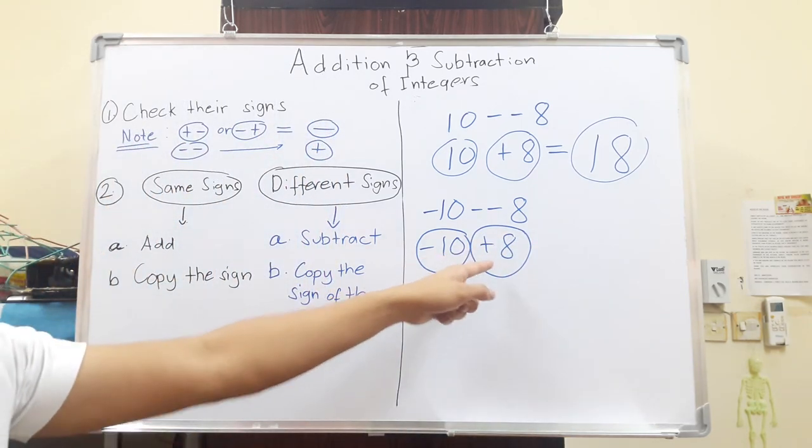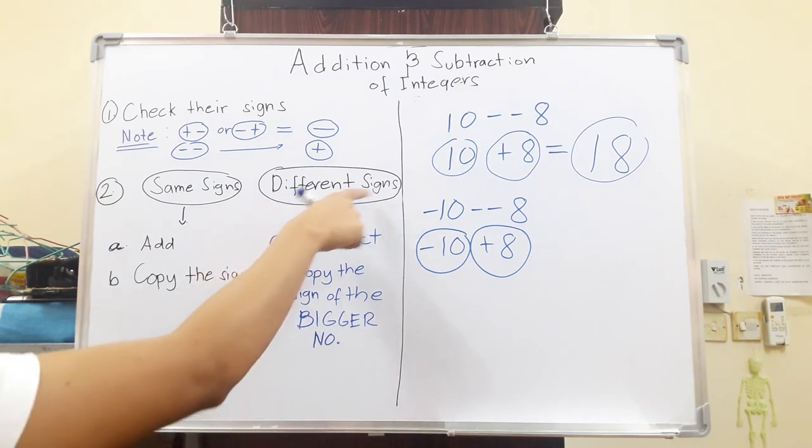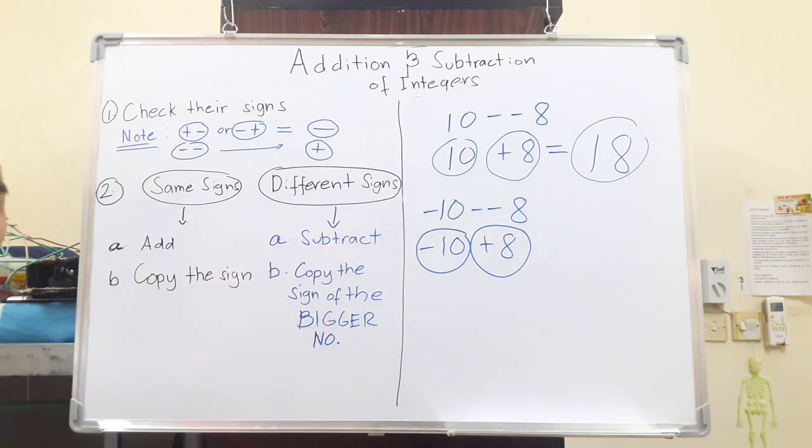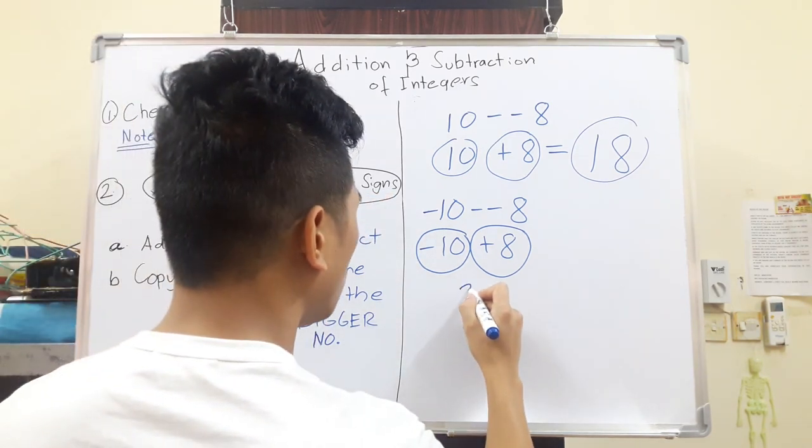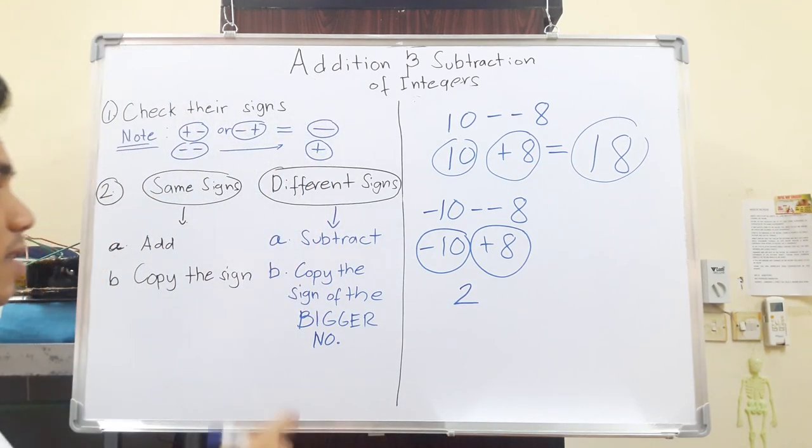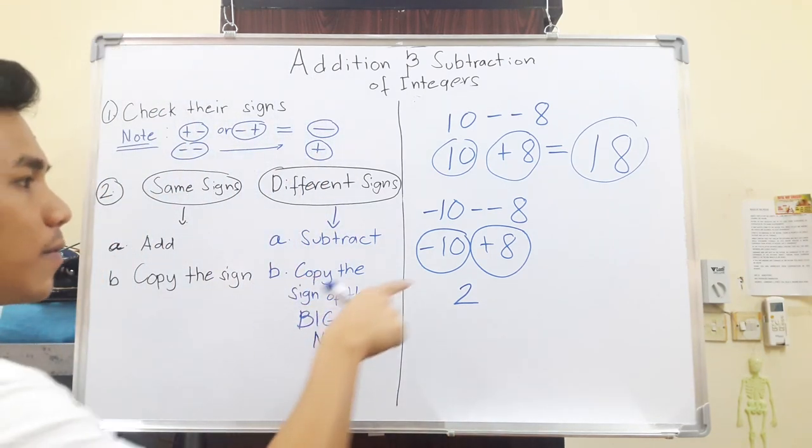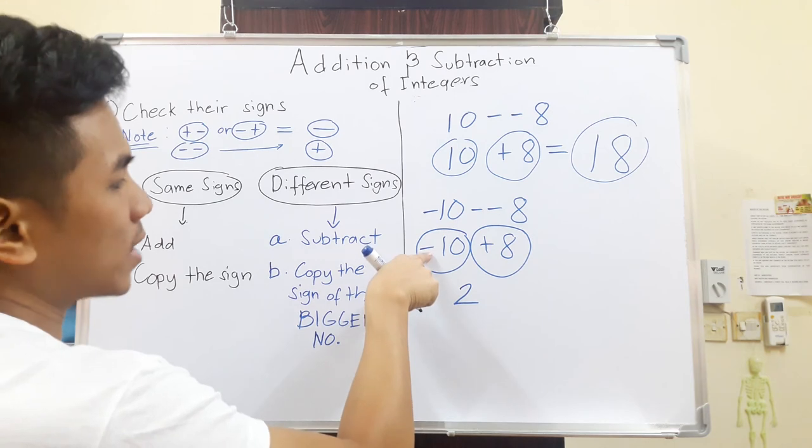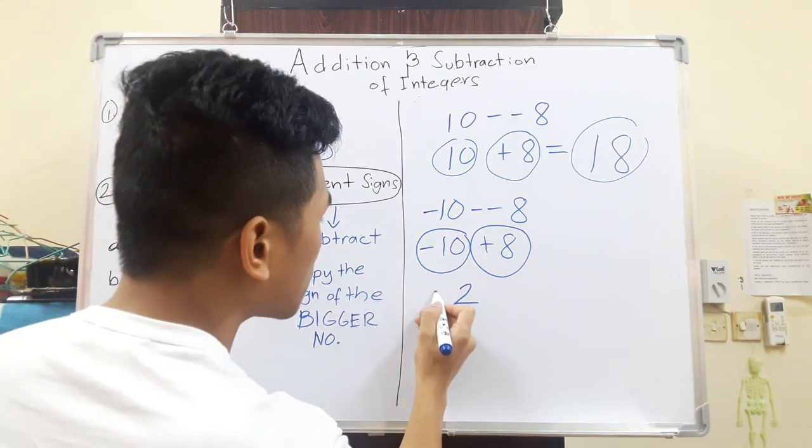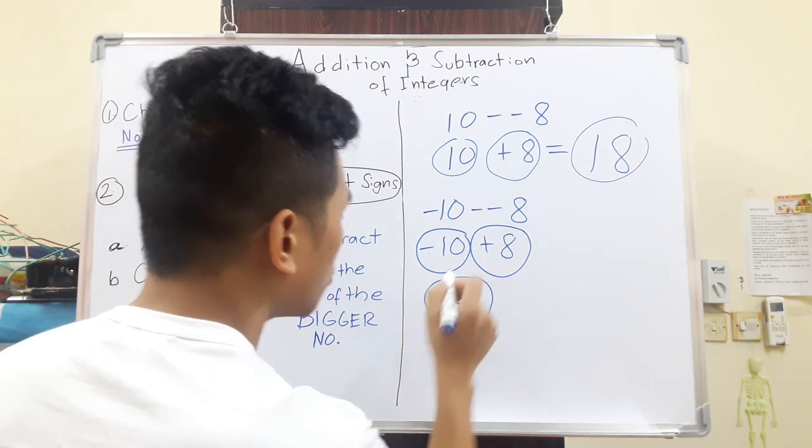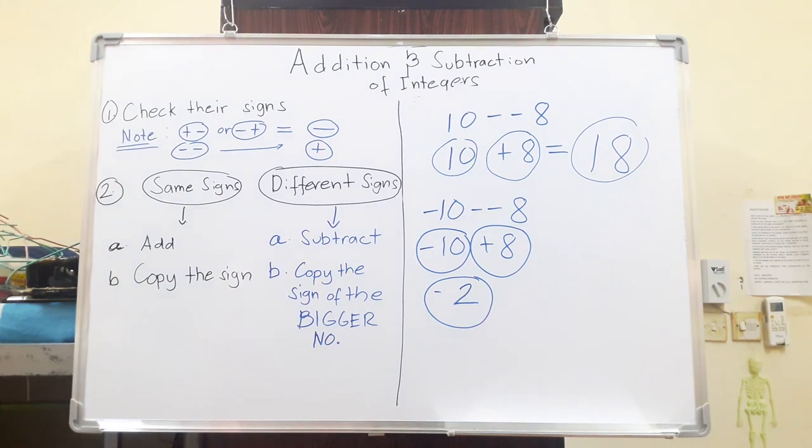Since I have two numbers that have different signs, number one, subtract. What is 10-8? 10-8 is 2. Next, copy the sign of the bigger number. 10 is bigger. And the sign of 10 is negative, so we will just write negative 2. And that is how you add or subtract integers.